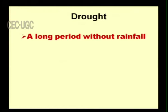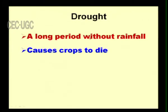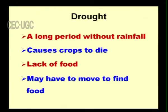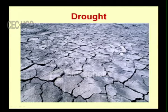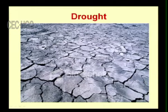Drought means a long period without rainfall. It causes crops to die and a lack of food, forcing humans and animals to move in search of food and water. The land becomes barren — there is no vegetation, no roots — and the temperature increases drastically. The top soil breaks into fragments, and that is the net result of drought.